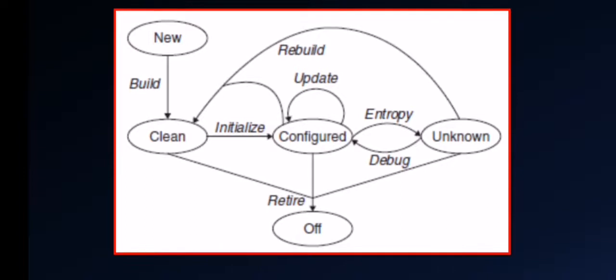New means a new machine or a new workstation. Clean refers to a computer with the OS installed but not configured to work in the environment — for example, its network is unconfigured, so there is no network communication between workstations or computers. Configured means a computer that is configured correctly according to the requirements of the computing environment. Unknown is a computer that has been misconfigured, so communication between networks is not possible because of the misconfigured network protocols.